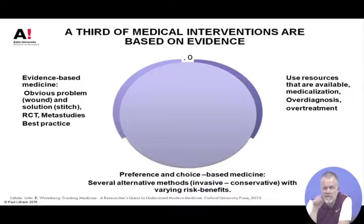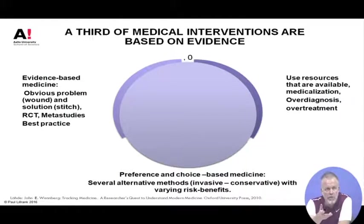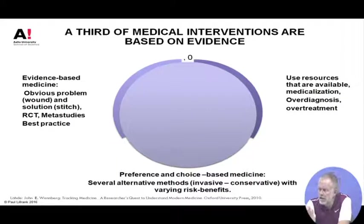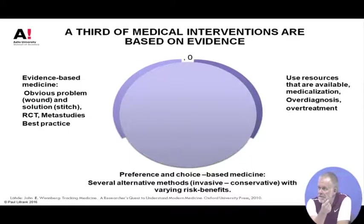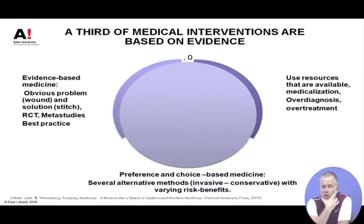Evidence-based medicine means that what the doctor is doing is based on hard evidence from clinical medicine — things studied in medical school, things proved by randomized control trials and published in medical journals. So it's scientifically based. That's one third. The second third, according to Wennberg, is preference and choice-based medicine.